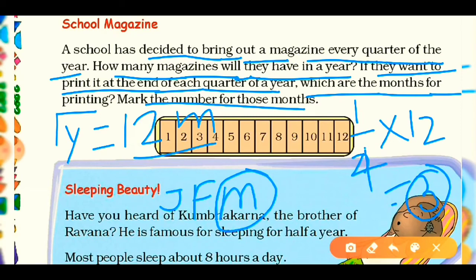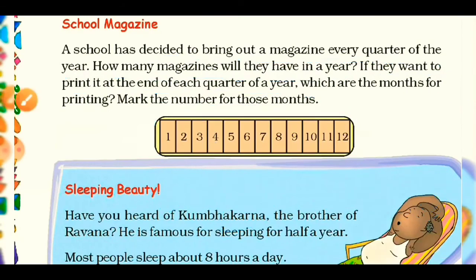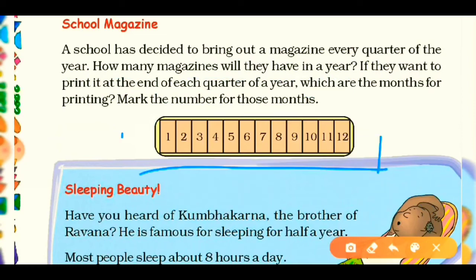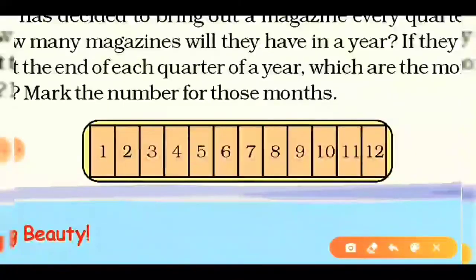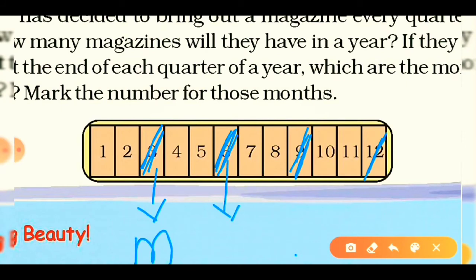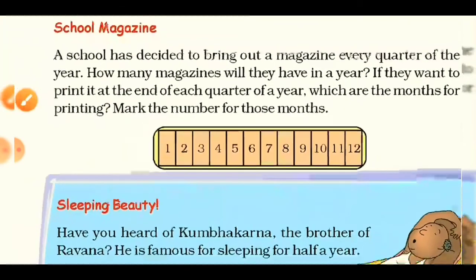To find which months are for printing, mark every third month. The months are numbered 1 to 12 (January to December). Every third month: month 3 (March), month 6 (June), month 9 (September), and month 12 (December) are the printing months.